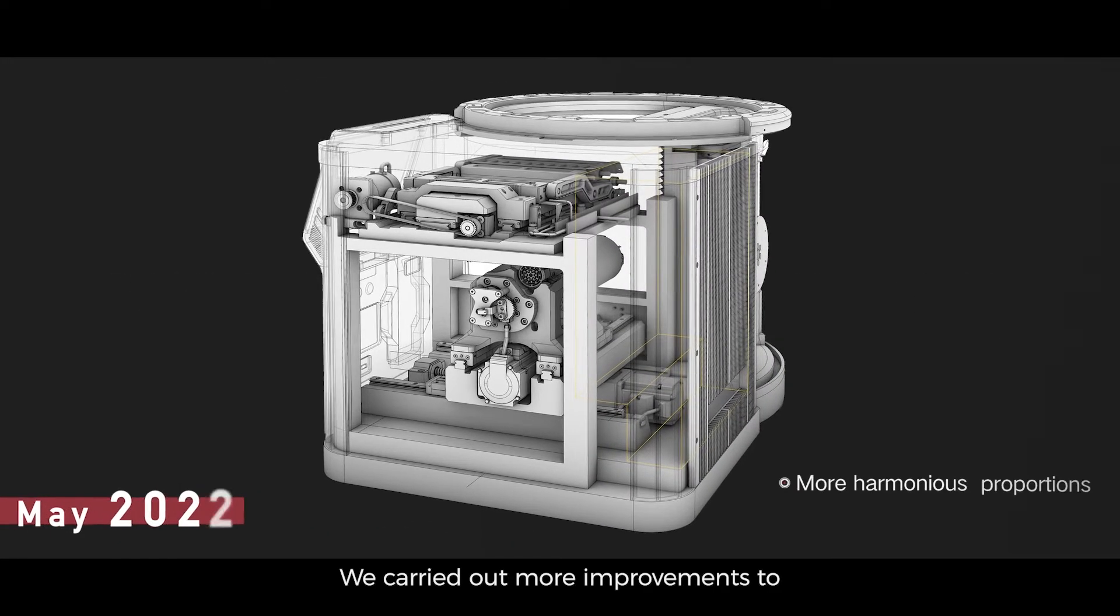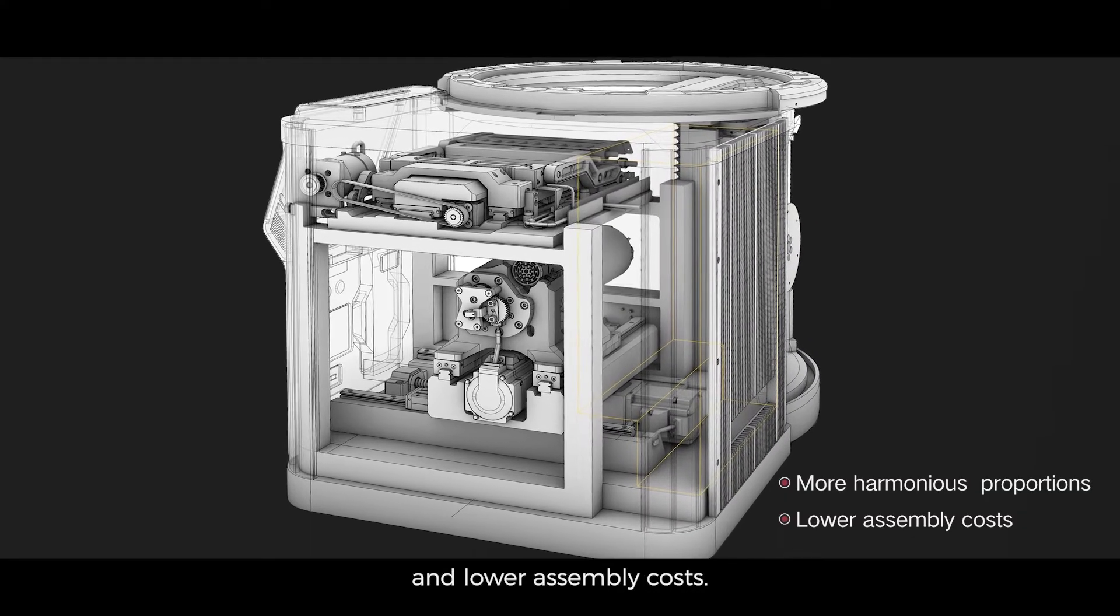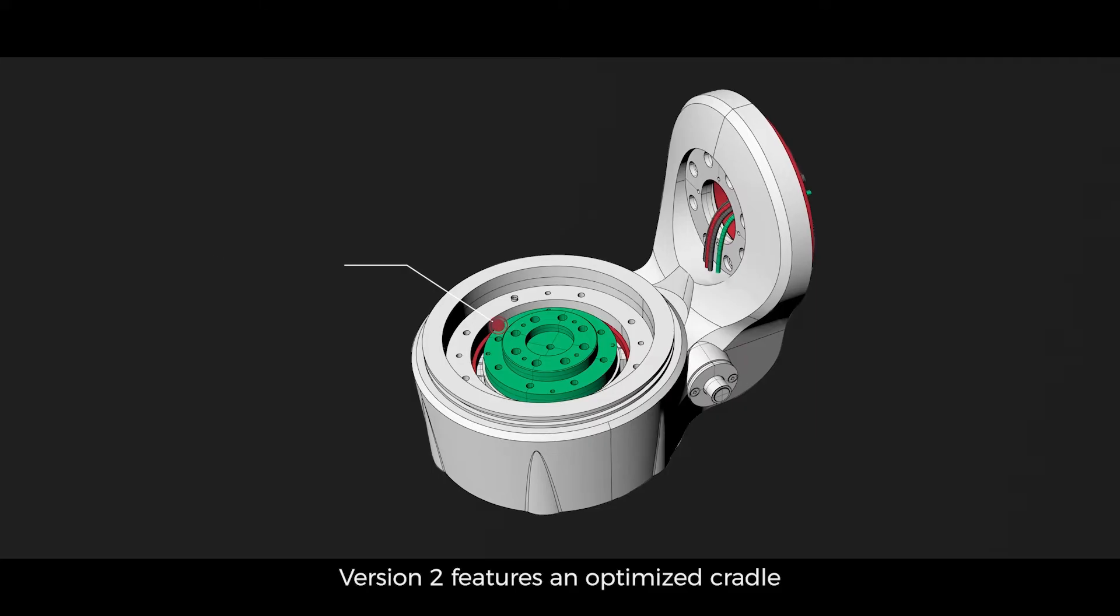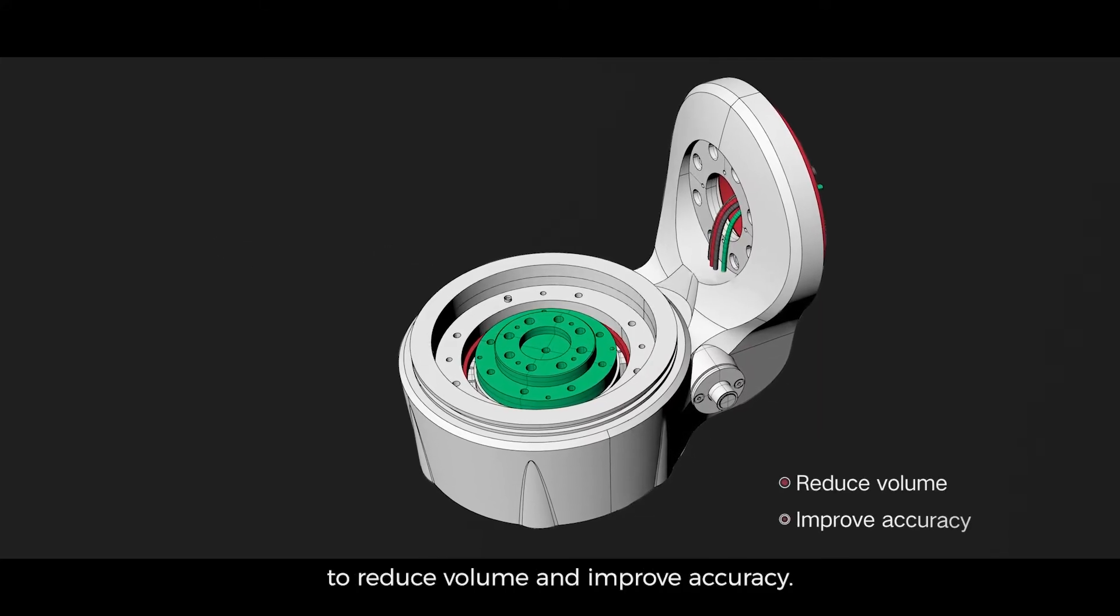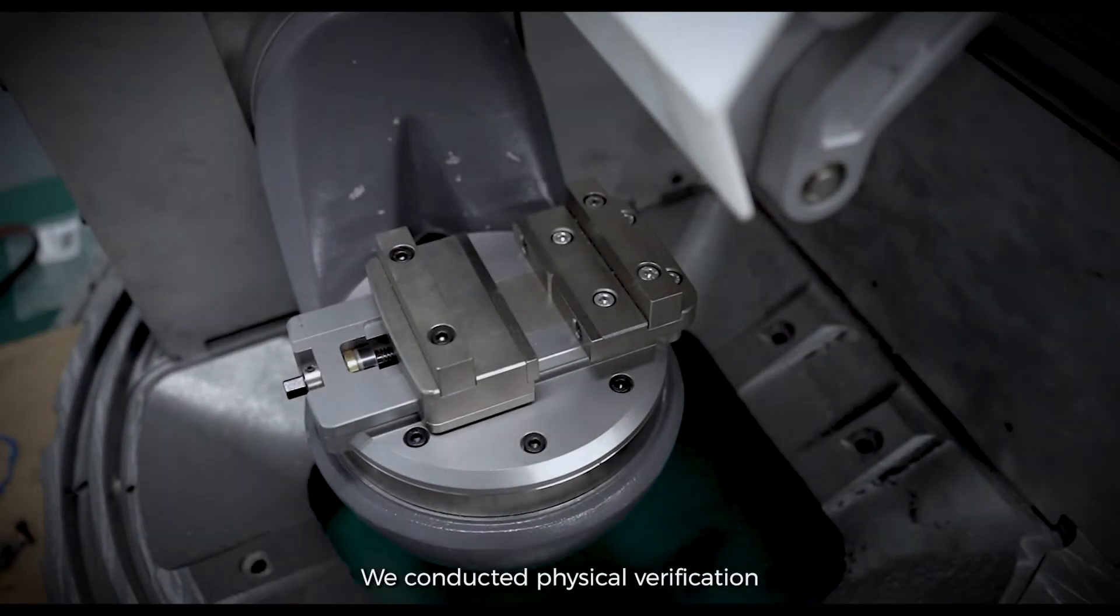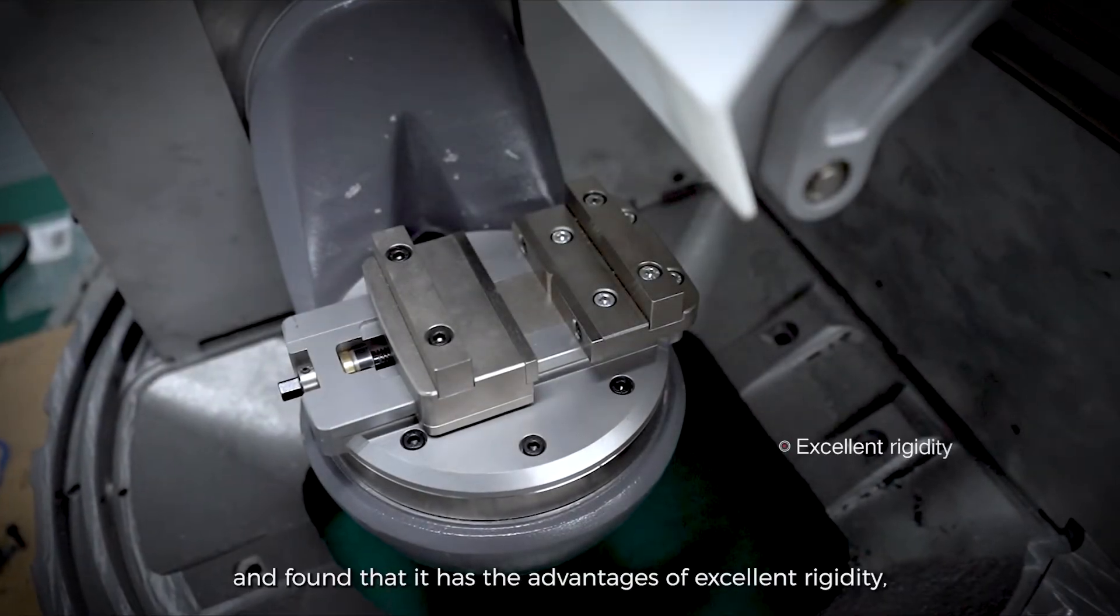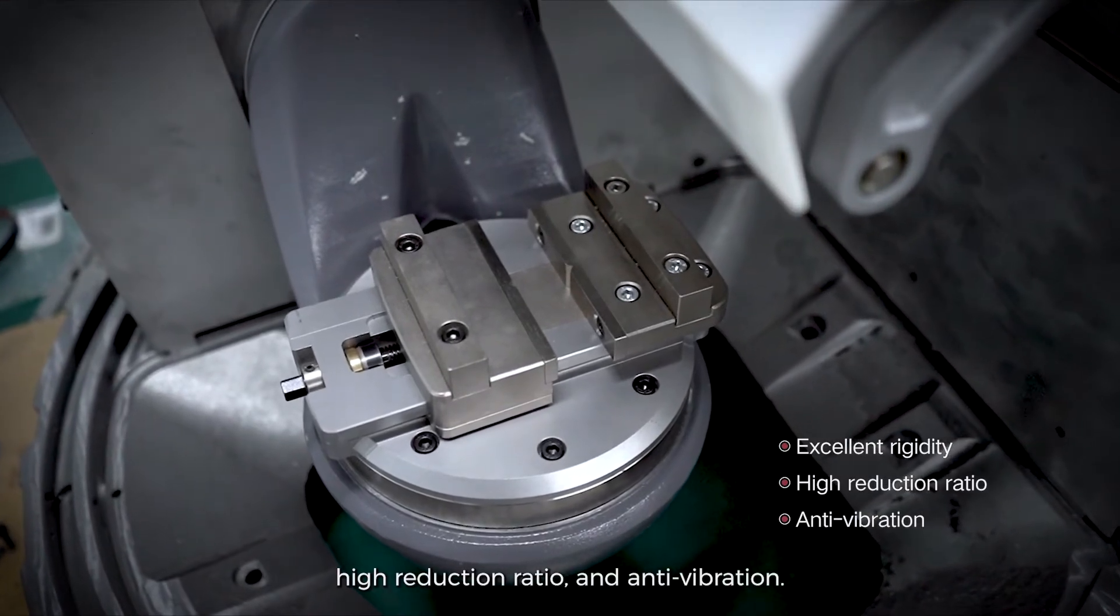We carried out more improvements to achieve a more harmonious proportion and lower assembly costs. Version 2 features an optimized cradle and adopts the harmonic drive scheme to reduce volume and improve accuracy. We conducted physical verification and found that it has the advantages of excellent rigidity, high reduction ratio and anti-vibration.